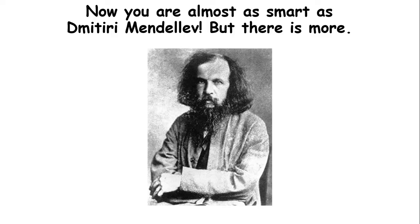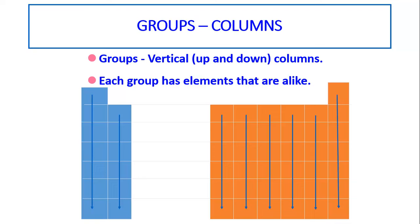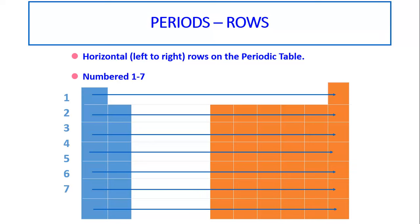There is more to learn from this. Groups, which we also call columns. Groups are vertical, up and down. Each group has elements that are alike. Remember that. Each group has elements that are alike, up and down the column. Periods, also called rows, they run across horizontally from left to right in the rows. They're numbered one through seven.